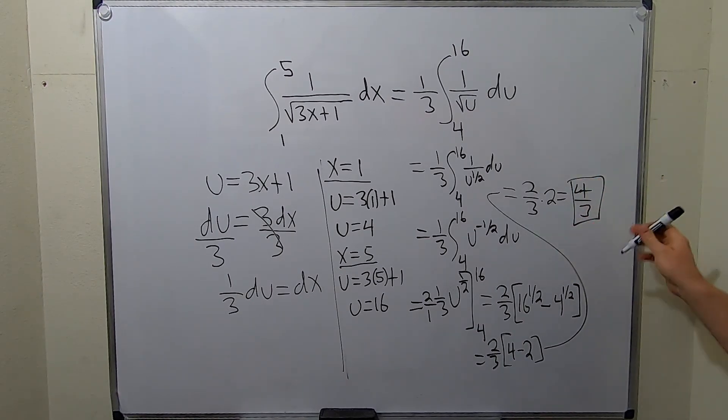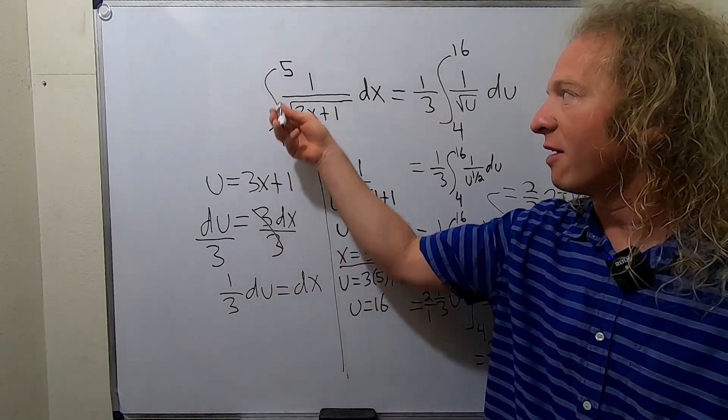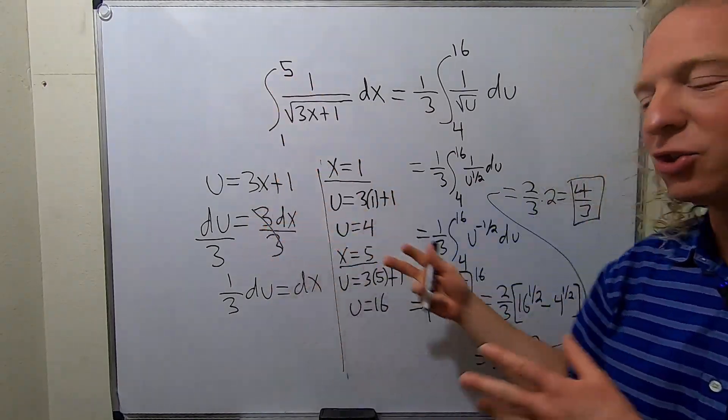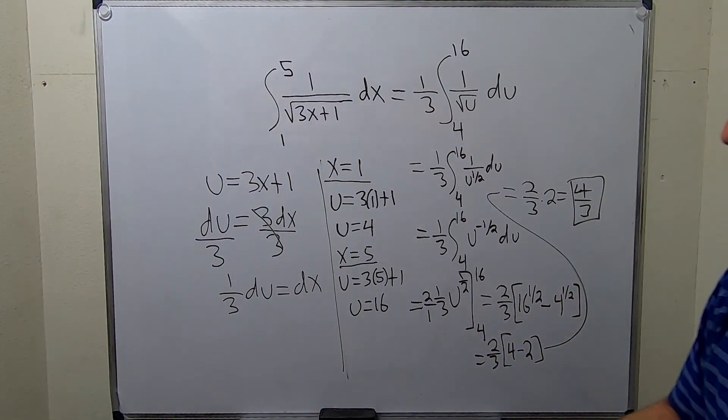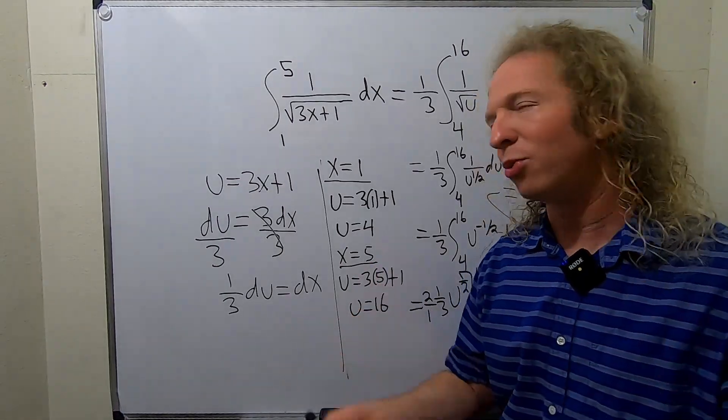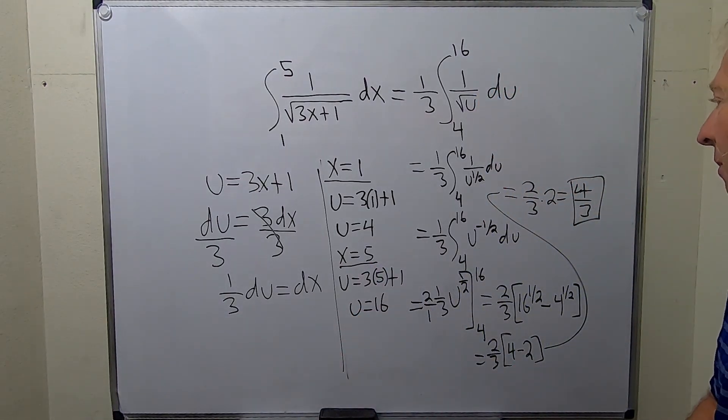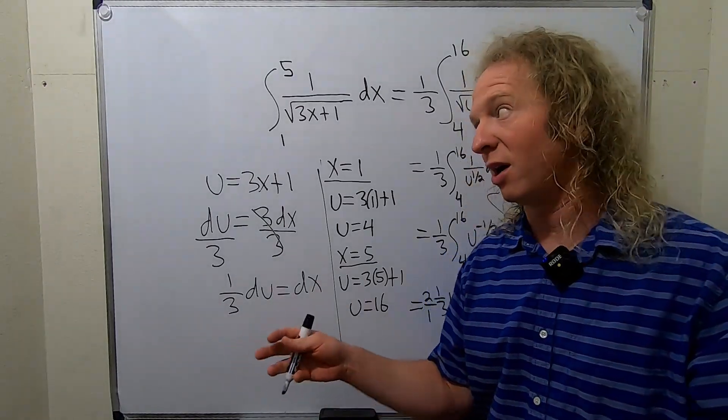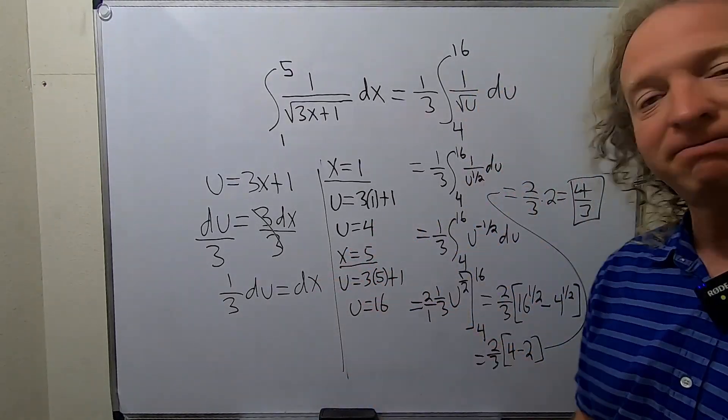So the key point is whenever you have a u substitution and you have limits of integration like this, you're supposed to change them. This is something that comes up in all calculus classes, so it's really, really important. It's a really, really useful technique. It comes up in other math as well like a lot. So yeah, that's it.